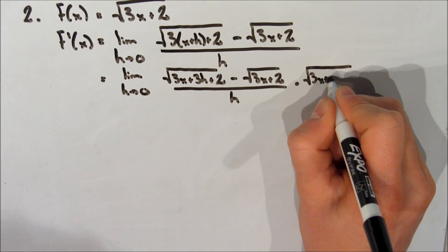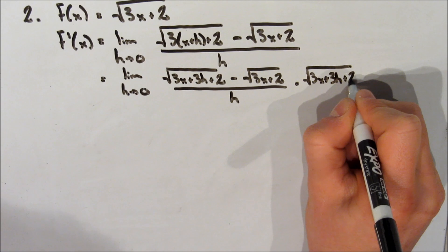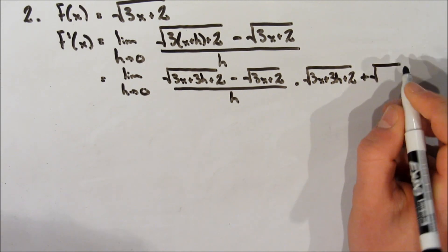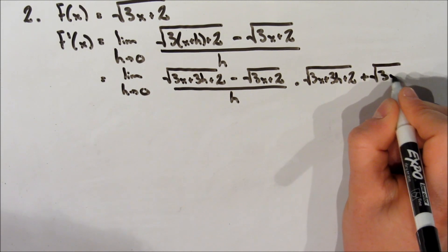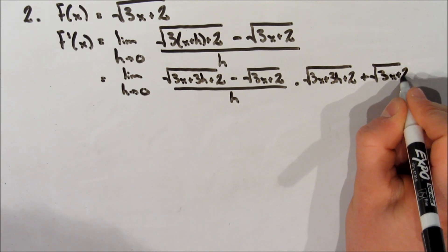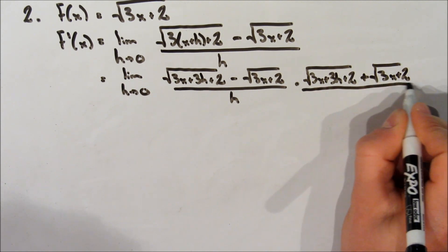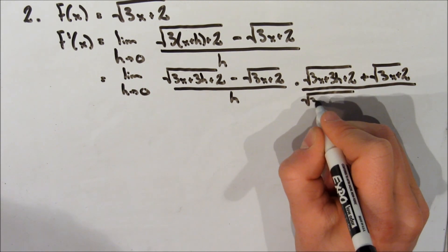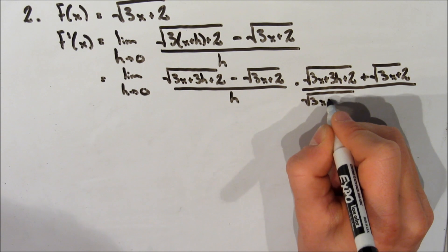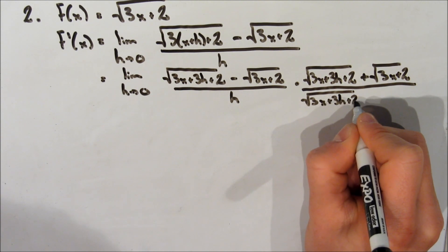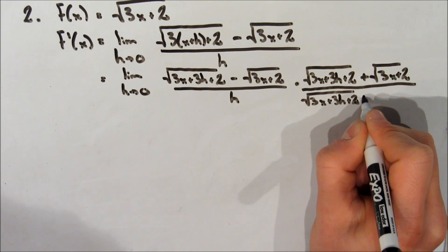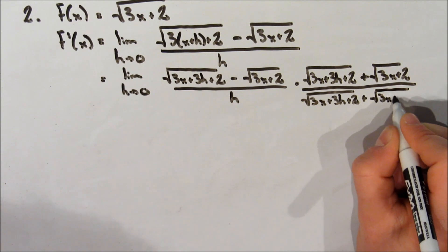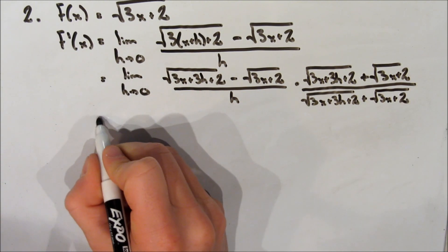We multiply by the square root of 3x plus 3h plus 2 plus the square root of 3x plus 2, all over that same denominator — the square root of 3x plus 3h plus 2 plus the square root of 3x plus 2.